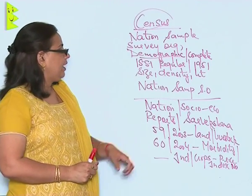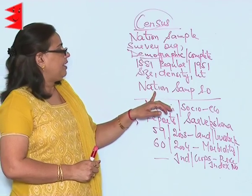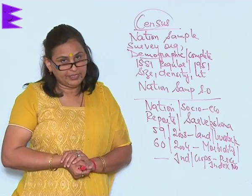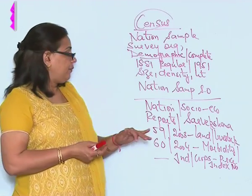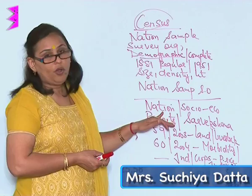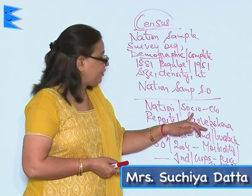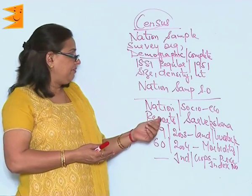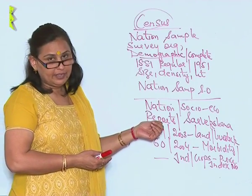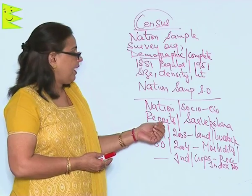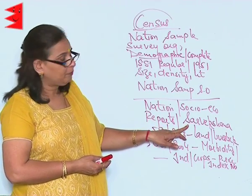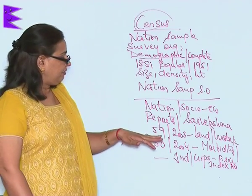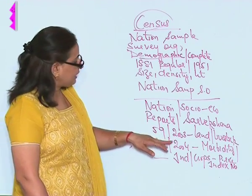Now, the National Sample Survey Organization collects surveys of the nation on various socio-economic issues and presents reports in various journals. It also publishes a quarterly journal. For example, in the 59th survey, which was held in 2003, they collected data on land and livestock.